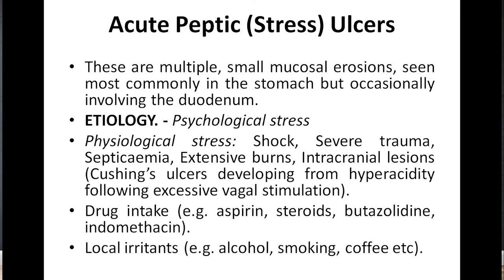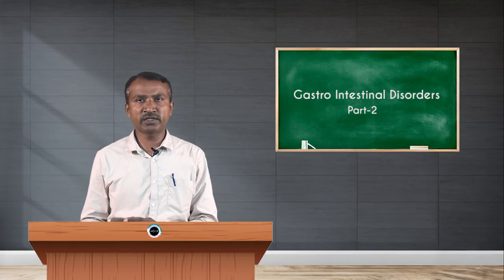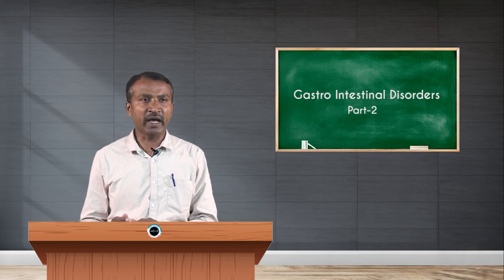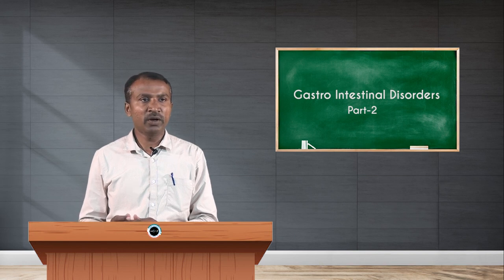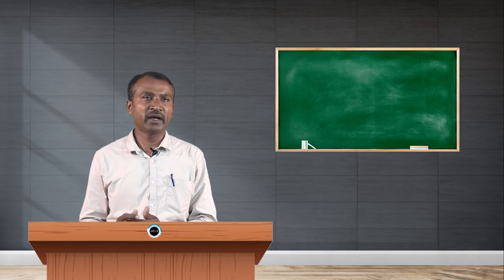Etiological factors of acute peptic ulcers include psychological stress; physiological stress such as shock, severe trauma, septicemia, extensive burns, and intracranial lesions; Cushing's ulcers developing from hyperacidity following excessive vagal stimulation; drug intake such as aspirin, steroids, and indomethacin; and local irritants like alcohol, smoking, and coffee.